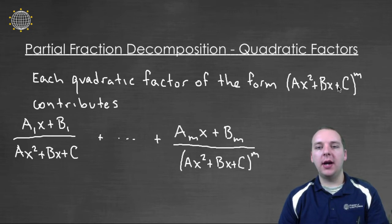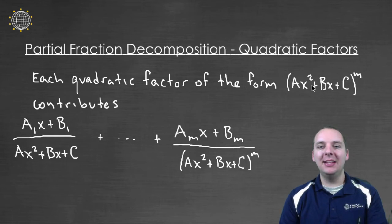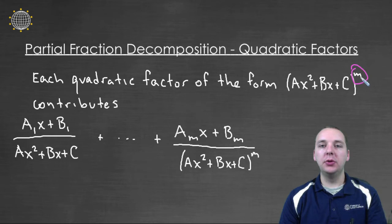If you have a quadratic factor in the denominator of your rational expression, then each one of those quadratic expressions is going to contribute a few terms to the decomposition. Now, how many terms is it going to contribute? Well, that depends on its power. So if it was a quadratic to the first power, it would only contribute a single term to the decomposition. But if this power was two or three or four, then it would contribute two or three or four terms to the decomposition.